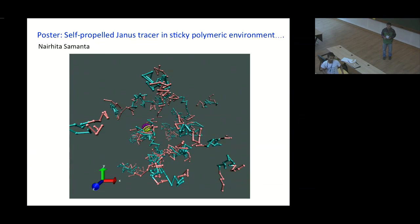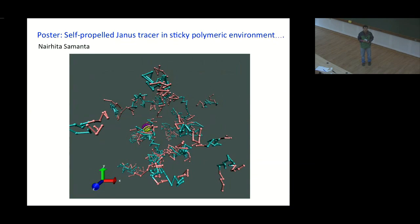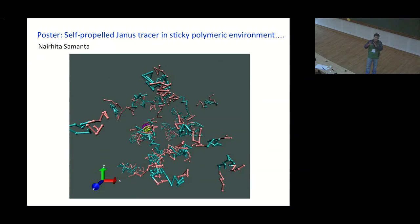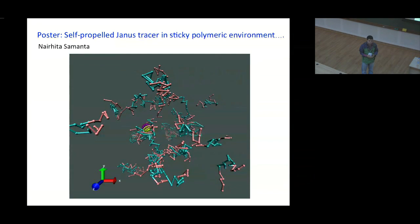Question: What about the transition from non-Gaussian to Gaussian as tracer size changes from very small to large? Response: We have done very small tracer and then a big one, but have not analyzed the in-between sizes. It is most likely that a bigger tracer does not see the heterogeneity — it averages out very fast — so you get a Gaussian distribution. For very small tracers at intermediate time scales you can see non-Gaussian behavior, but at long times everything becomes Gaussian.